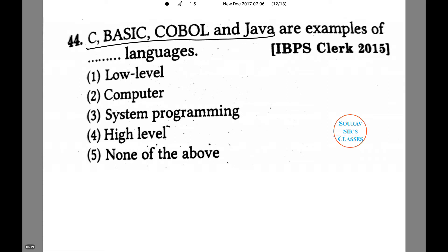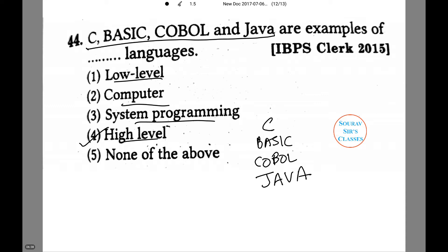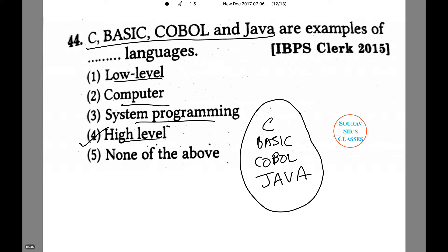C, Basic, Cobalt, and Java are examples of what kind of languages? Is it low level, computer language, system programming language, or high level language? The answer is option number 4. C, Basic, Cobalt, and the most used programming language Java are all high level languages. They can process and compile heavy programming and many data analysis programs. Thus they fall into the fourth category, which is our correct option.